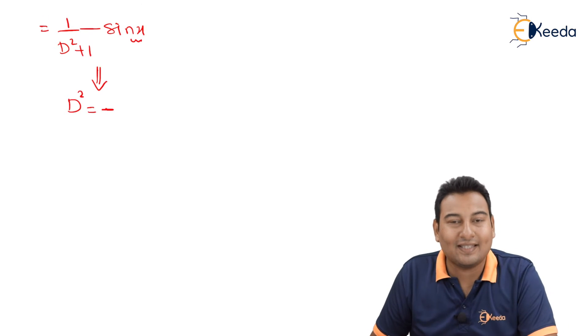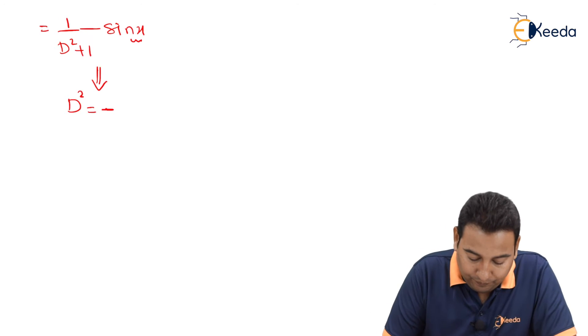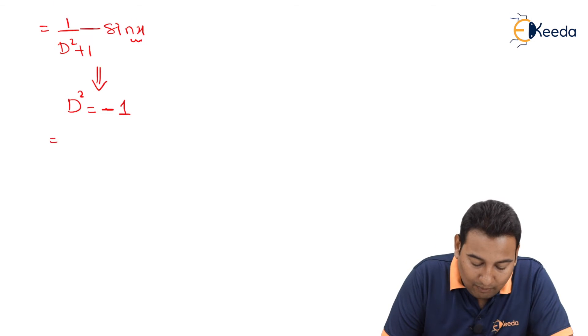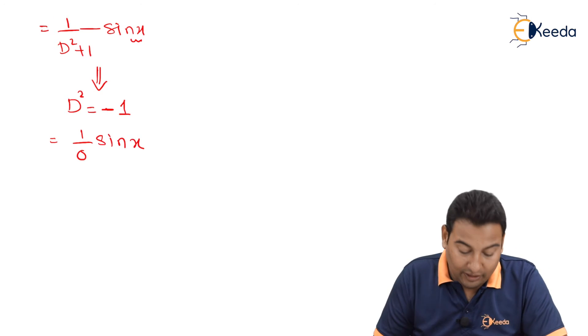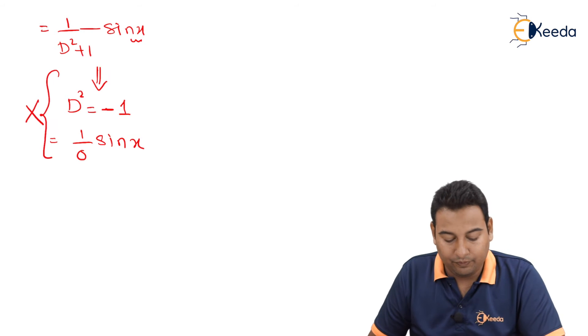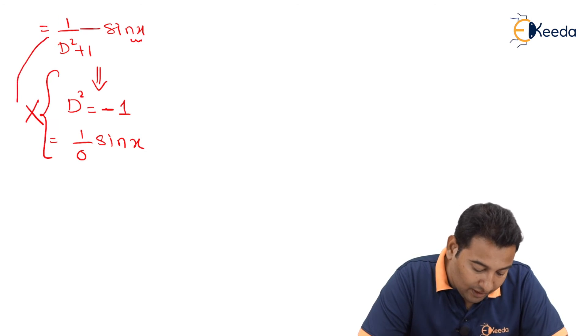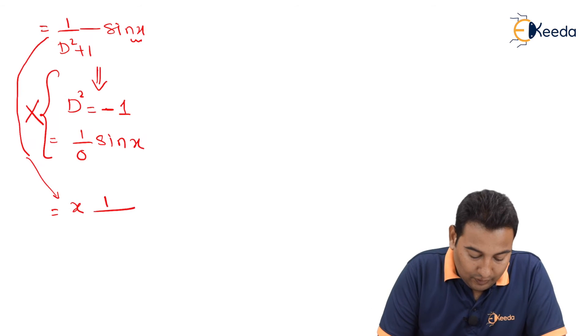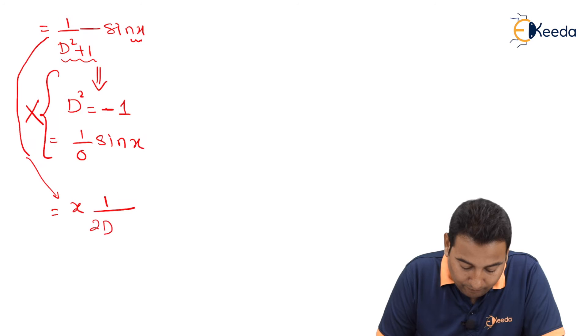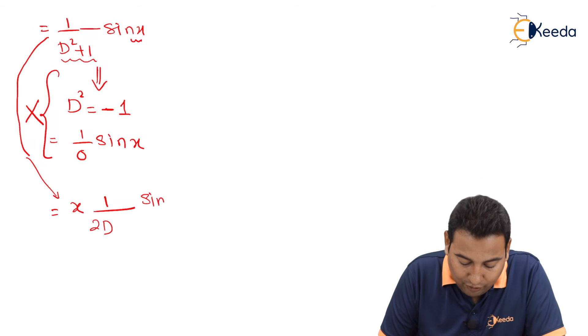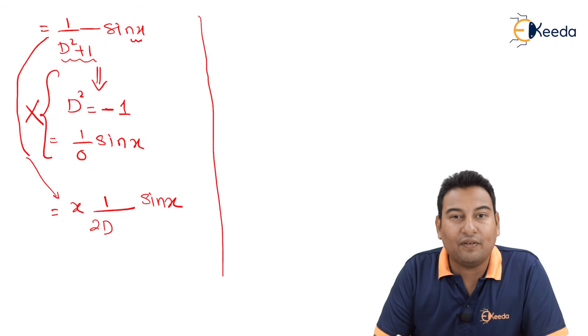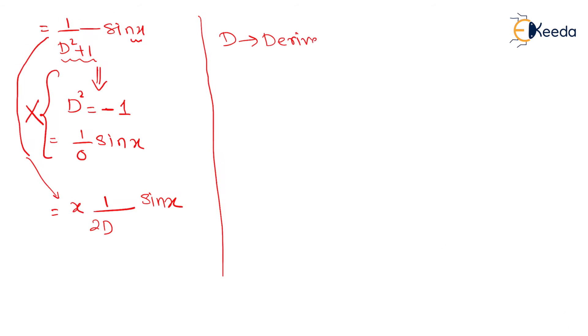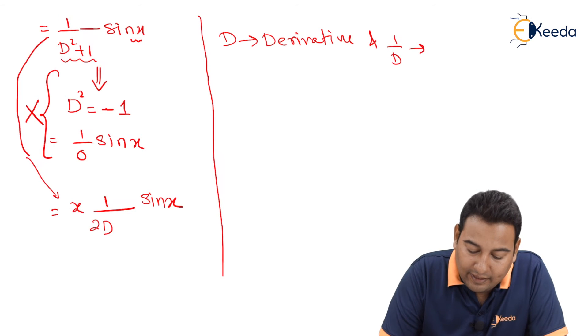Minus 1 square is minus 1. But the problem is, if you replace D² with minus 1, you will get 1/0, which is not a valid solution. Therefore, I am not going to do this. Because I am not getting the valid solution. What I need to do is, I am going to multiply with x and I am going to take the derivative. D² plus 1 derivative. D² derivative is 2D plus 1 derivative is 0. And here, we do have sin x. This is the same example we have discussed in solution of higher order differential equation. D is a derivative. And 1/D is integration basically.